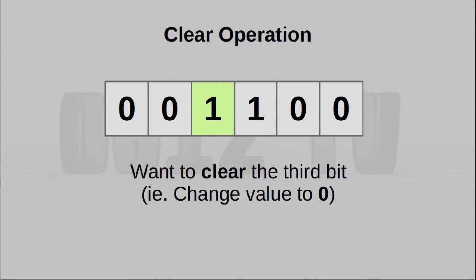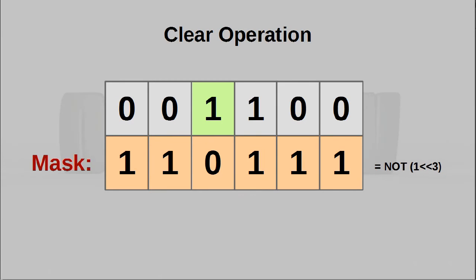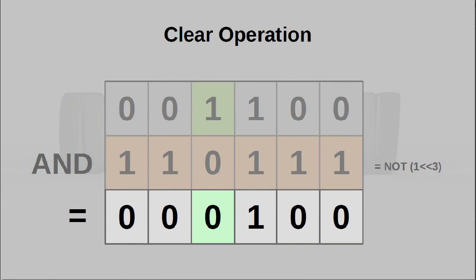I can also clear a particular bit. To do this I'll generate a mask that is one everywhere, except at the bit I want to change. Then perform an AND operation between the mask and the original number. You'll keep the value of everything except the bit you want to change, which gets forced to zero.